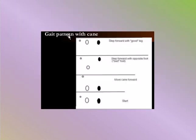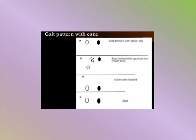The commonest type is the quadrupod. Gait pattern with cane: move the cane forward first, then step forward with the opposite (bad) foot, then step forward with the good foot.